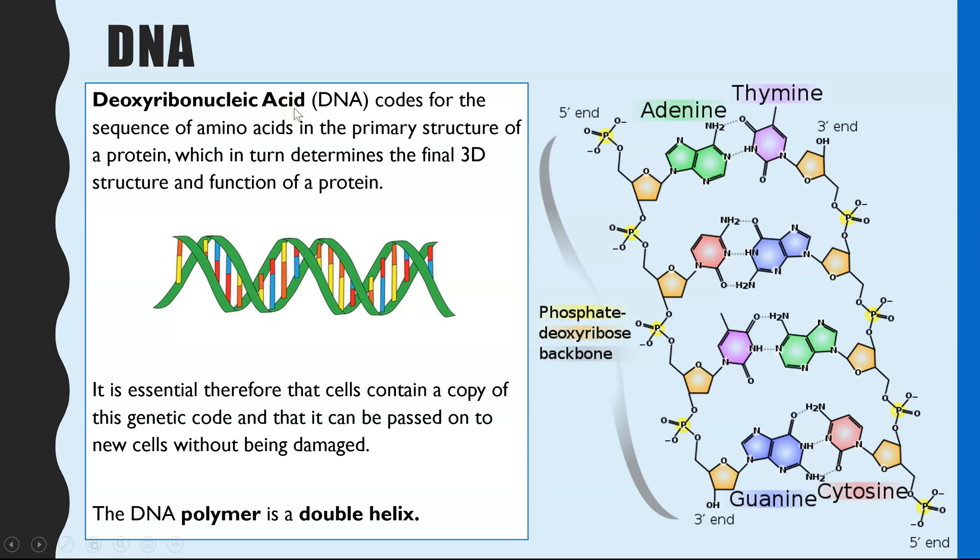Deoxyribonucleic acid. And it codes for amino acid sequences which are the primary structure in proteins, and that primary structure is what determines the final 3D shape of a protein and therefore the function of a protein. If you haven't already seen my video on proteins for A-level biology, I'll link it just here so you can go and check that out as well.